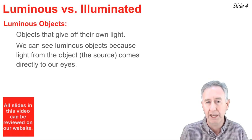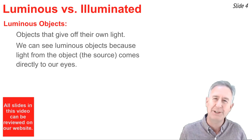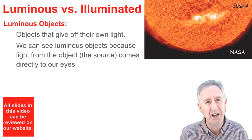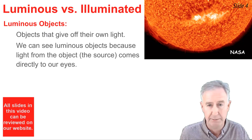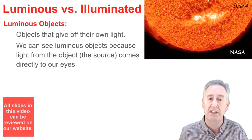Examples of luminous objects could be a light bulb, or perhaps the screen you're watching this wonderful video on, or the sun. We see all these objects because they create their own light, and that light comes to our eyes, giving us the ability to see them.